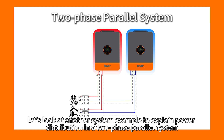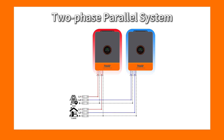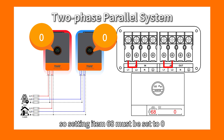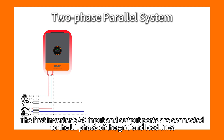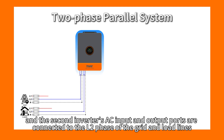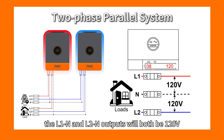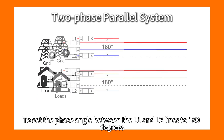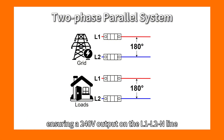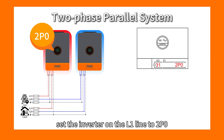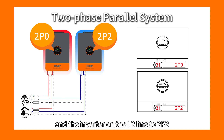Next, let's look at power distribution in a two-phase parallel system. In a two-phase parallel system with two inverters, the L1 and L2 AC ports are connected in parallel, so setting item 68 must be set to 0. The first inverter's AC ports are connected to the L1 phase, and the second to the L2 phase. Assuming setting item 38 configures the output voltage to 120V, the L1-N and L2-N outputs will both be 120V, with a 180-degree phase angle between them ensuring a 240V output on the L1-L2-N line. Setting item 31 should be set to 2P0 for the inverter on L1 and 2P2 for the inverter on L2.